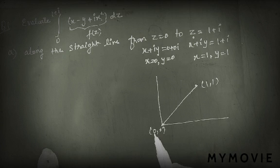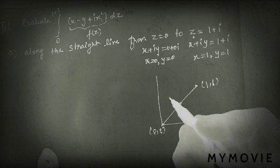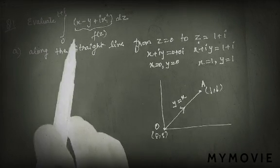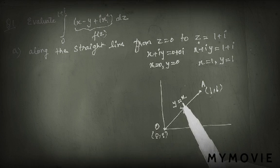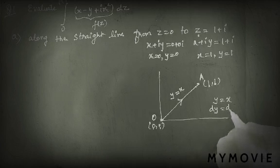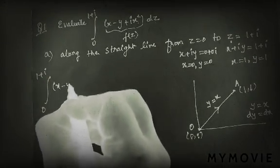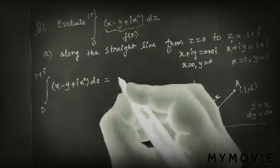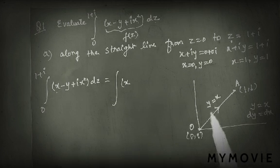This means we have a straight line y equals x. Let us consider this point as O and this point as A. This means we have to solve this integration along the line OA. We have to convert the question to a single variable. We give y equals x, which means dy equals dx.